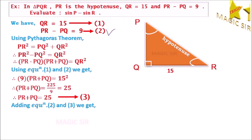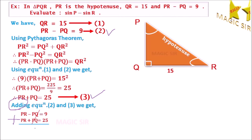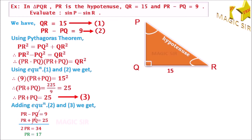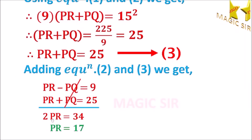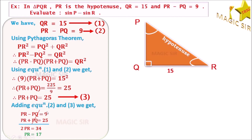Now adding equation 2 and equation 3: PR minus PQ equal to 9, and PR plus PQ equal to 25. Adding these two equations, minus PQ and plus PQ cancel. So PR plus PR equal to 2 times PR, and 9 plus 25 equal to 34. Dividing both sides by 2, we get PR equal to 17.